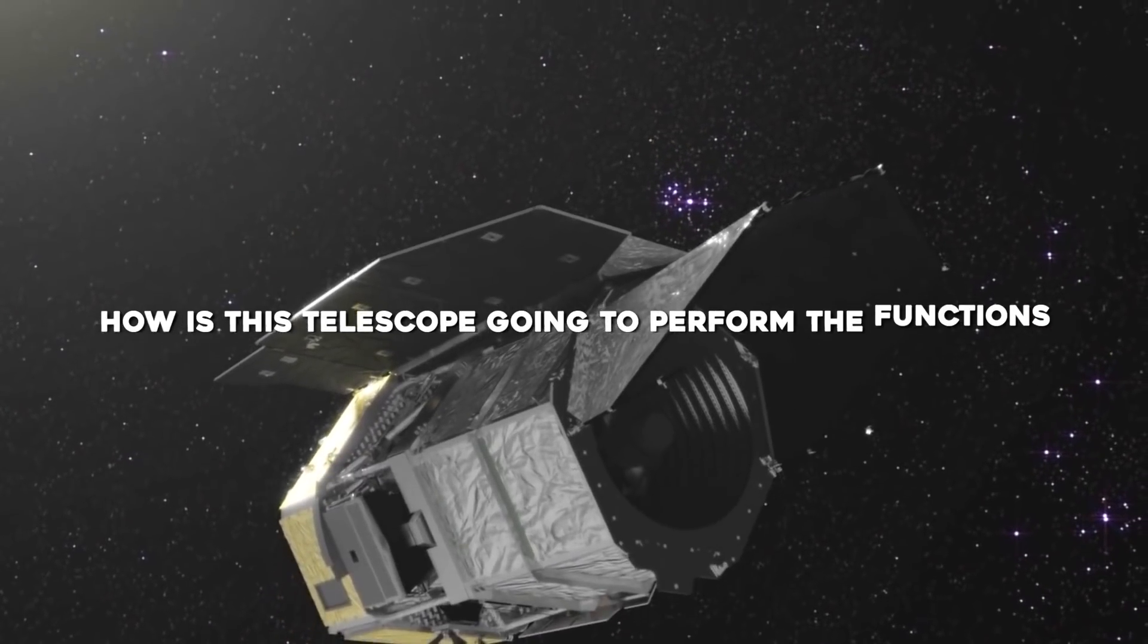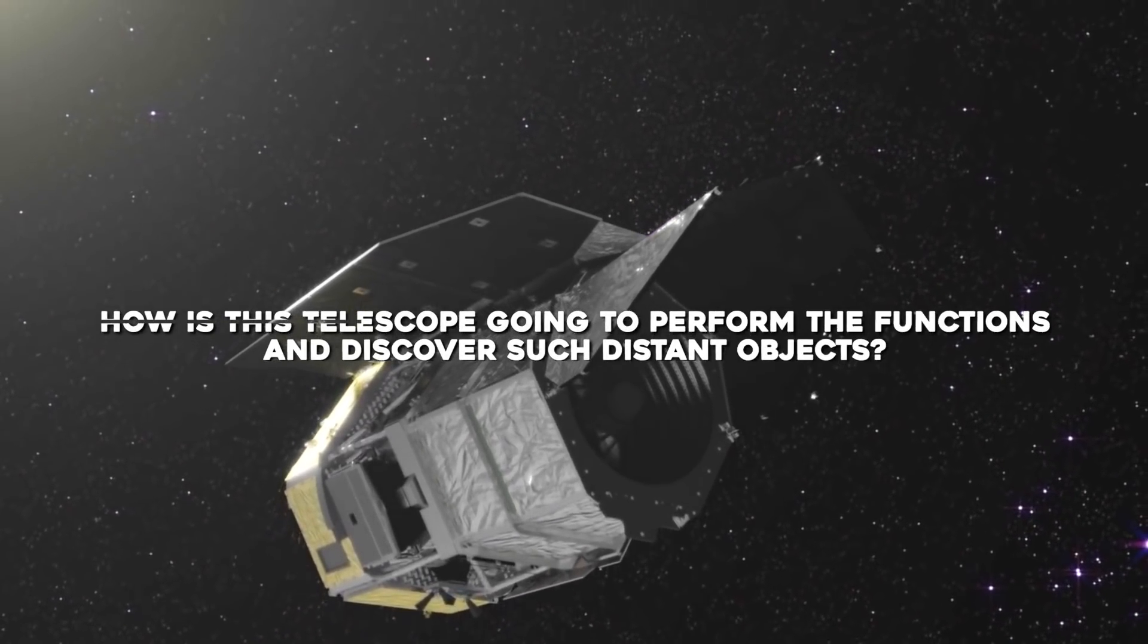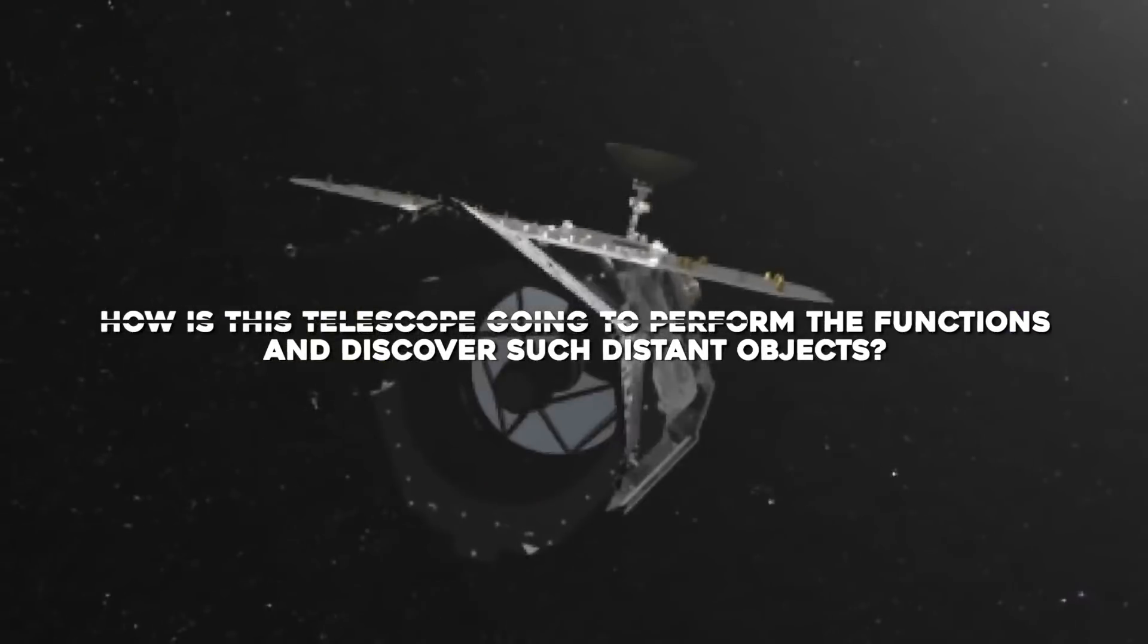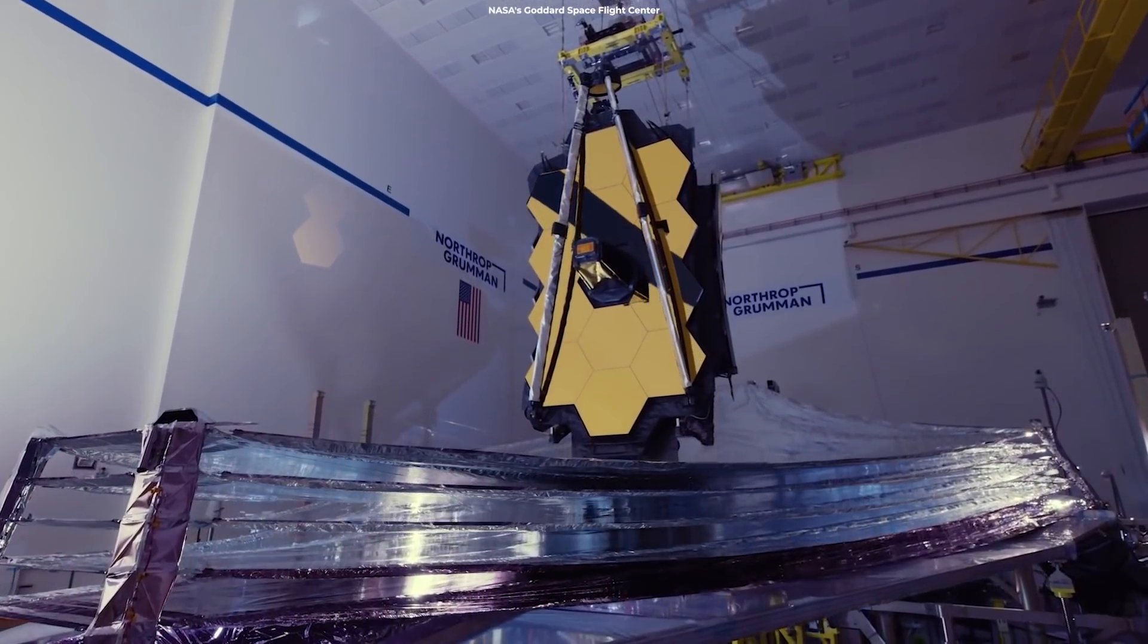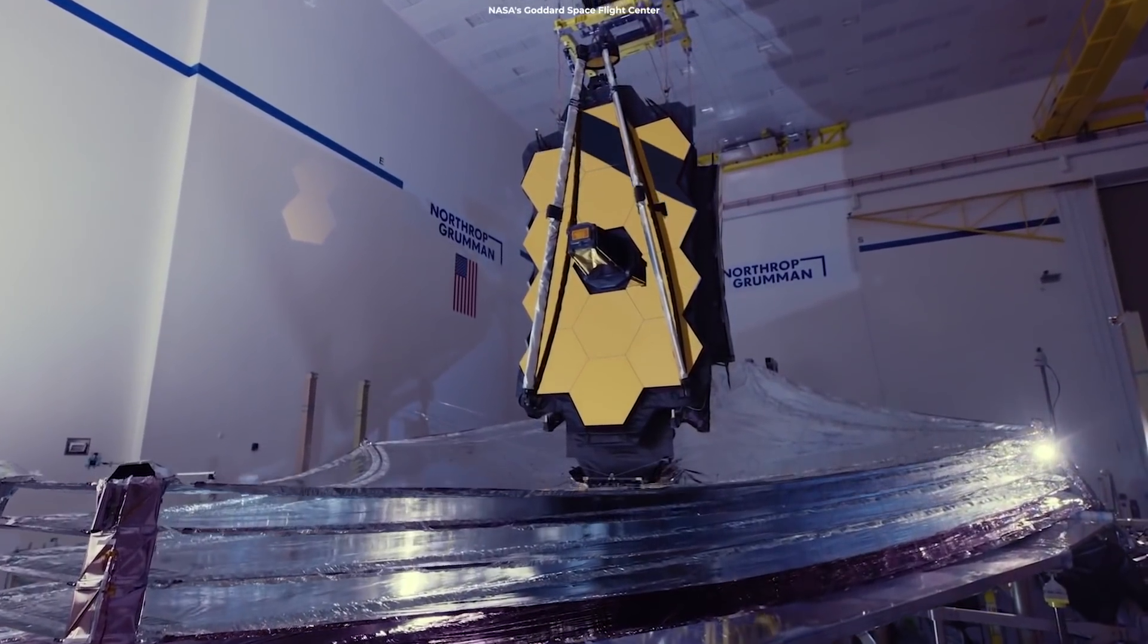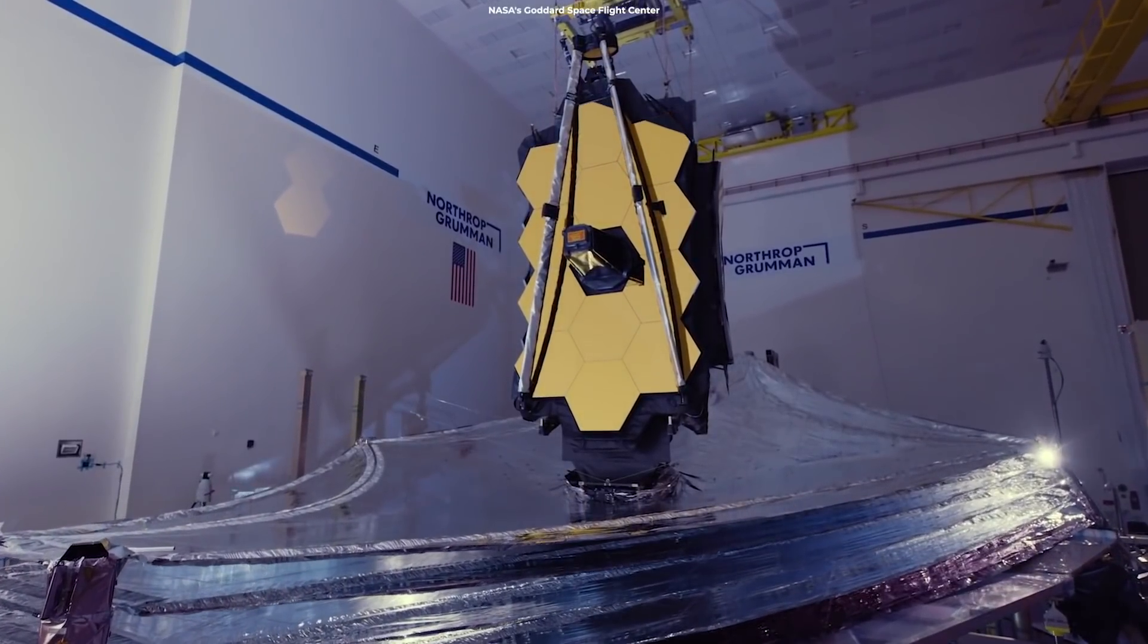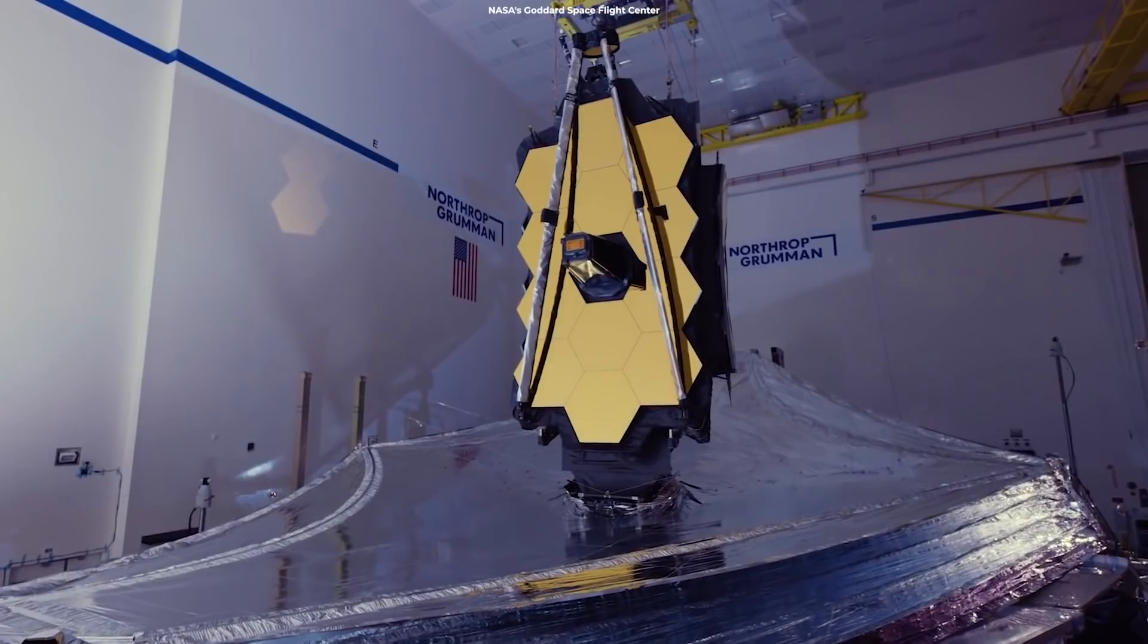The question here is, how is this telescope going to perform the functions and discover such distant objects? The answer obviously lies in its mirror. With a segmented telescope assembly and a massive sunshade to be deployed in orbit, the initial designs are comparable to JWST.